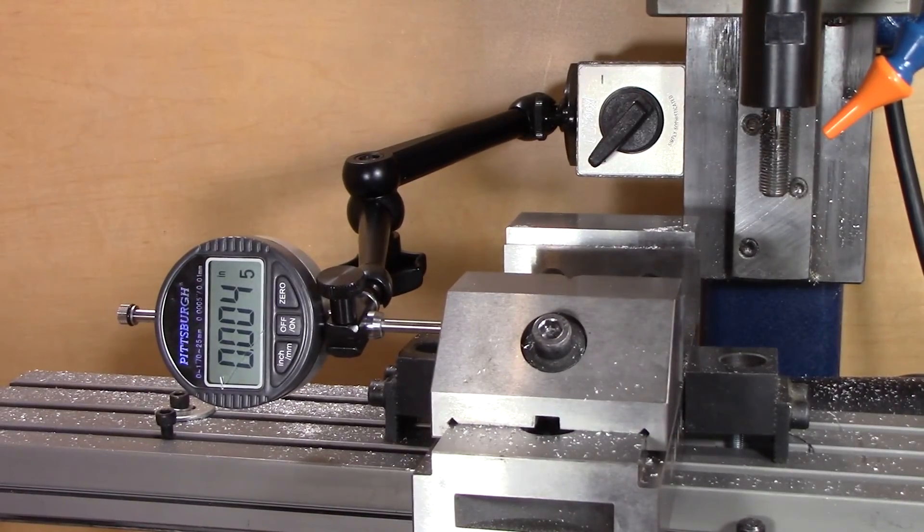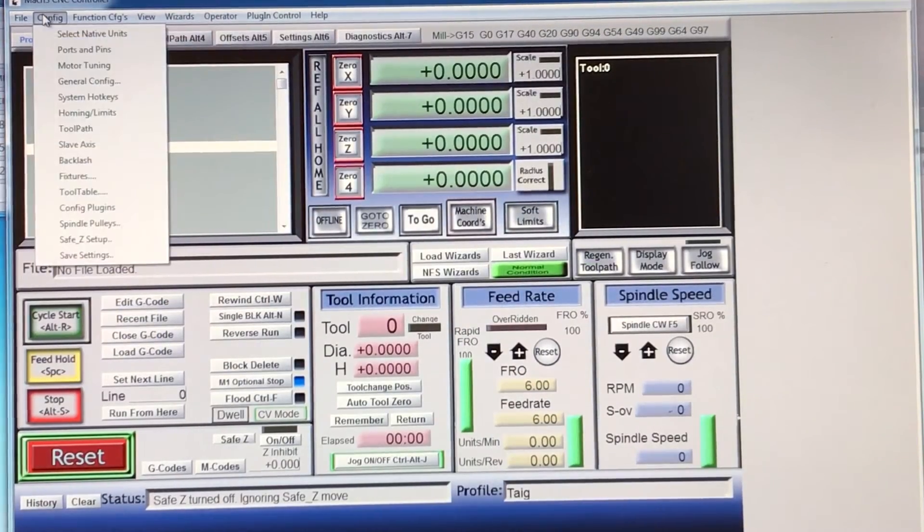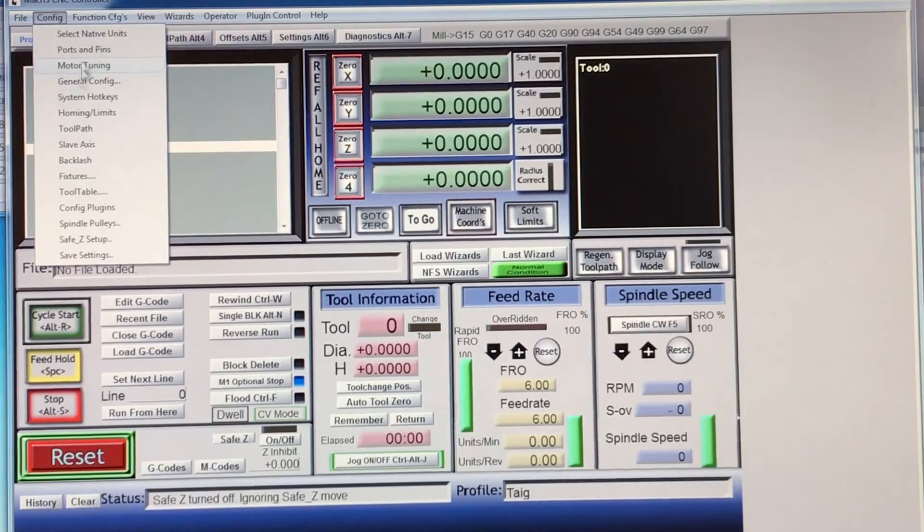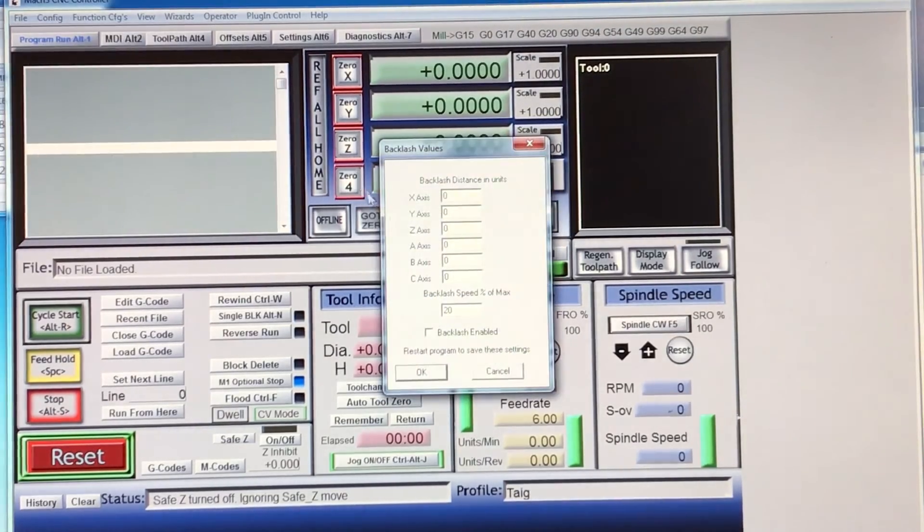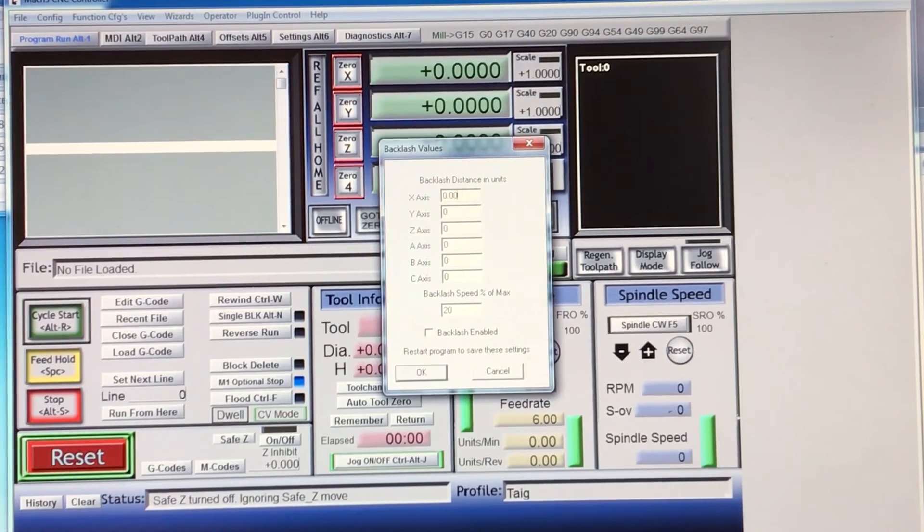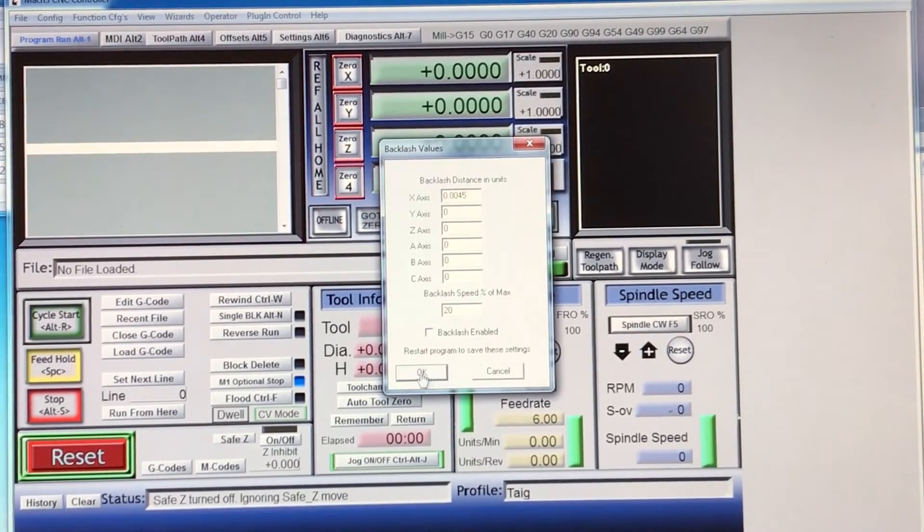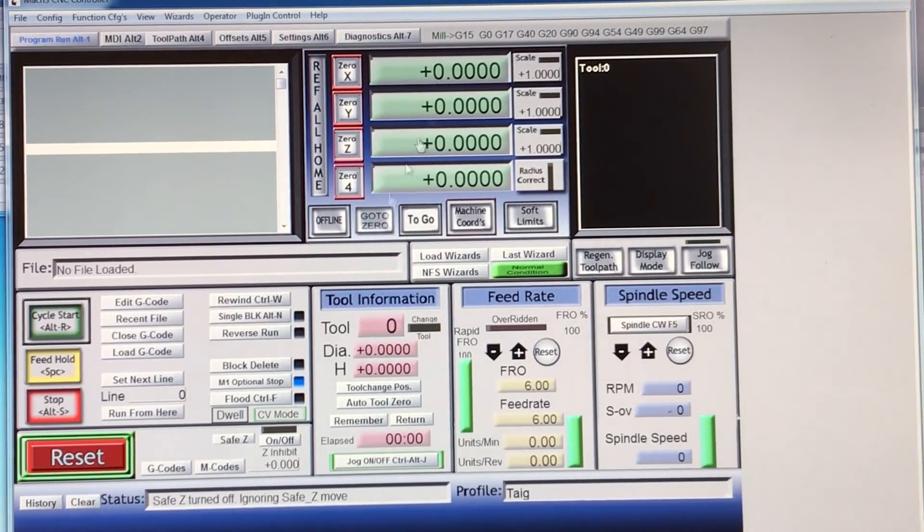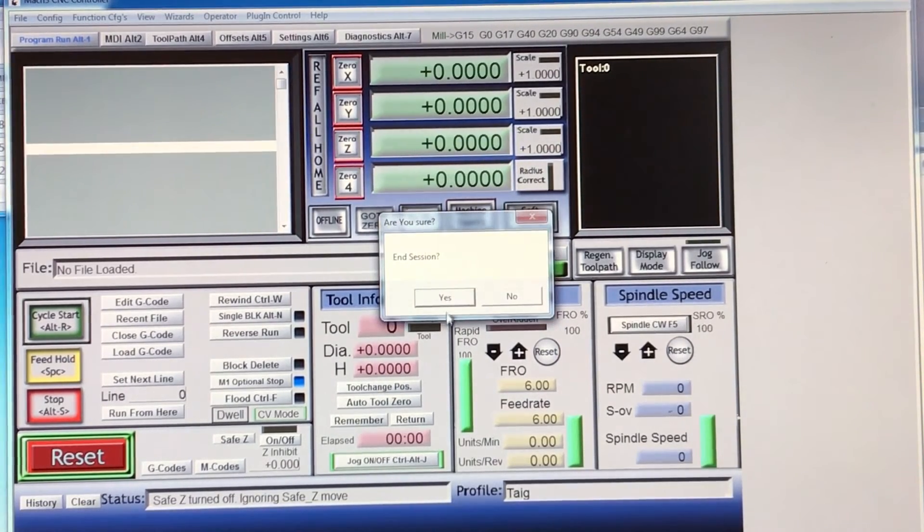Once I know that number, I go to Mach 3 and enter it: point zero zero four five. And enable backlash. One of the things that's required is you have to quit and restart Mach 3.